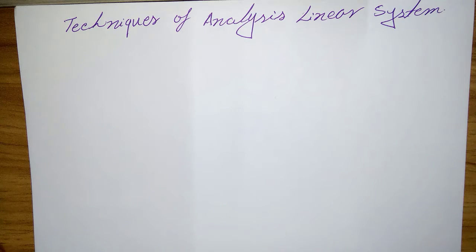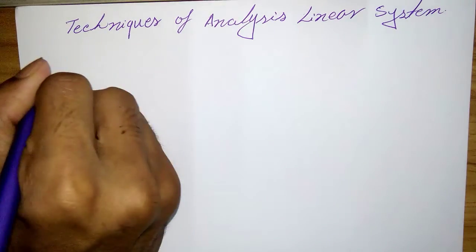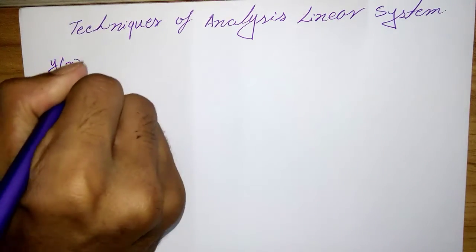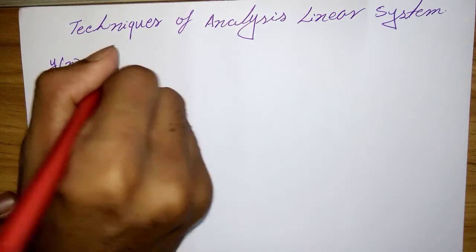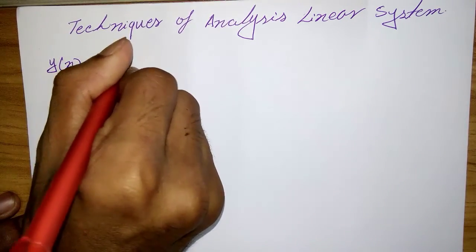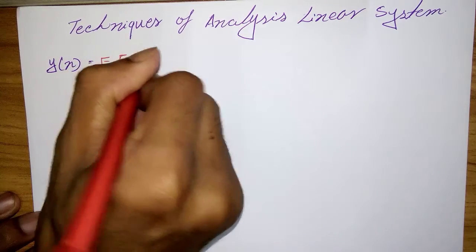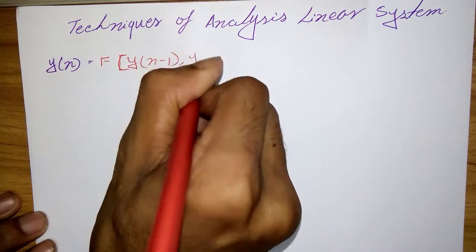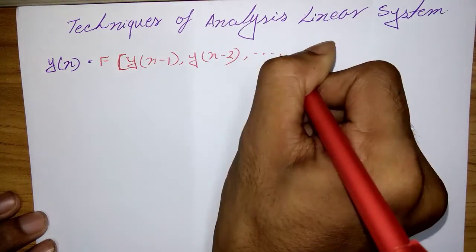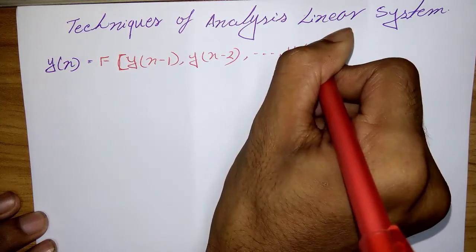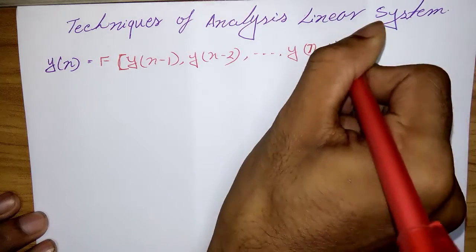The system generally has the form like y(n) equal f of y(n-1), y(n-2), dot dot dot, y(n-N), dot dot, x(n-M). In this method, the main analysis is where f of this function denotes some function of the quantities in bracket.